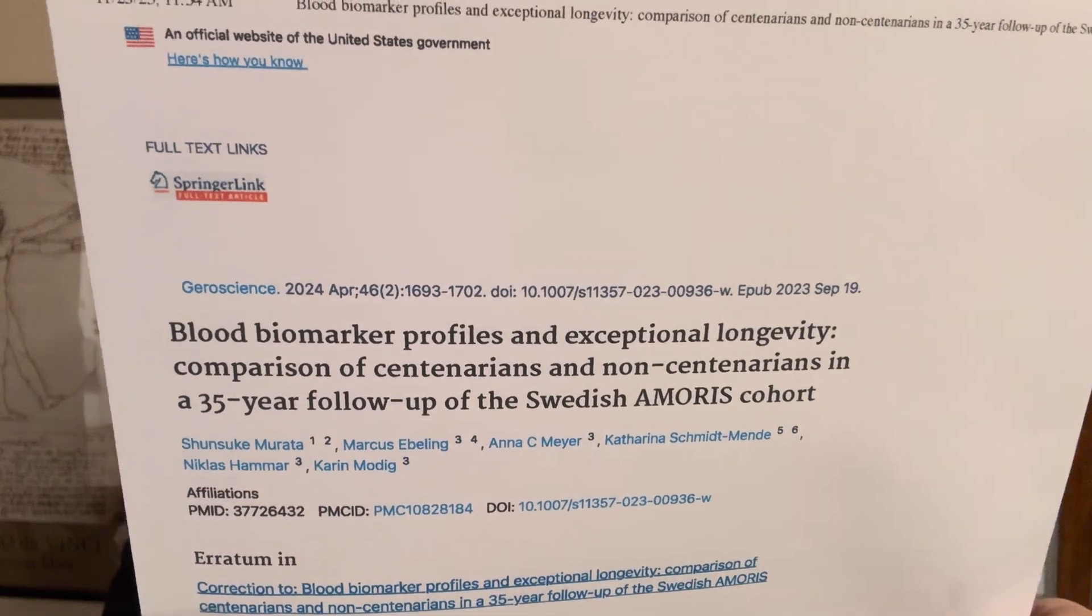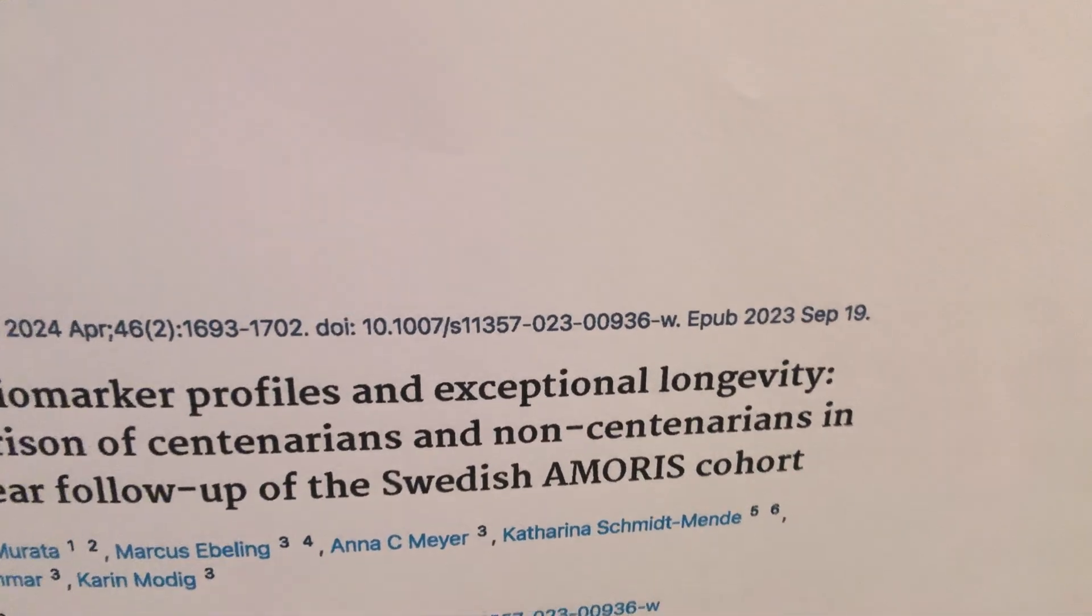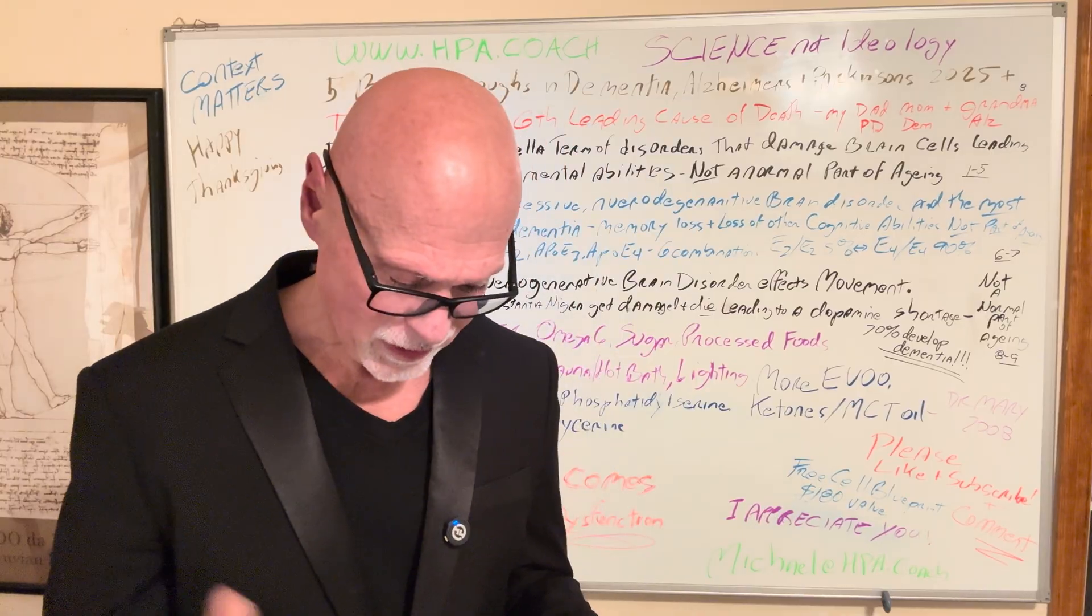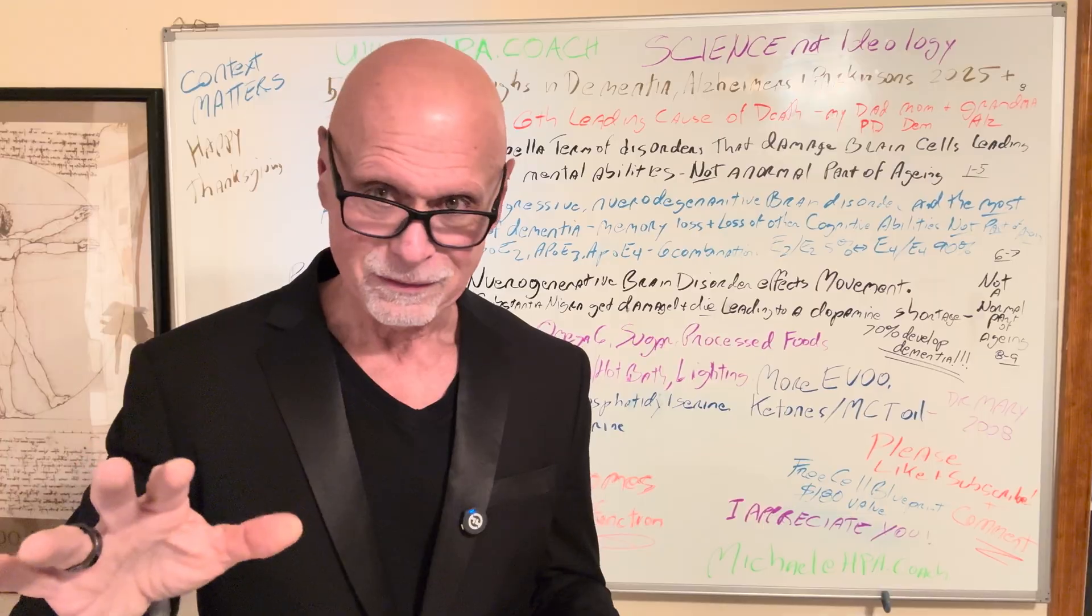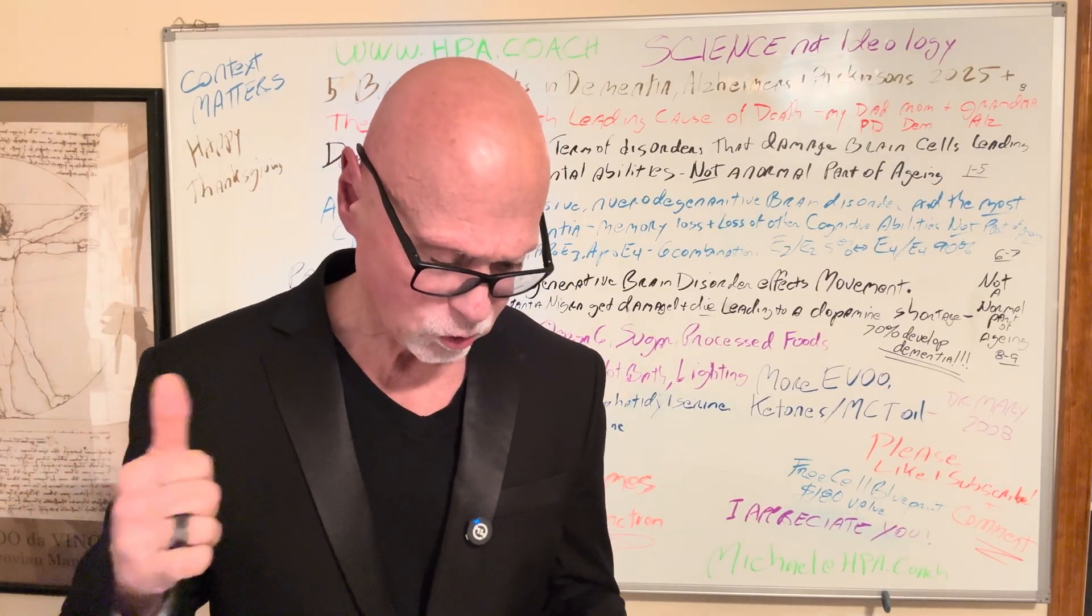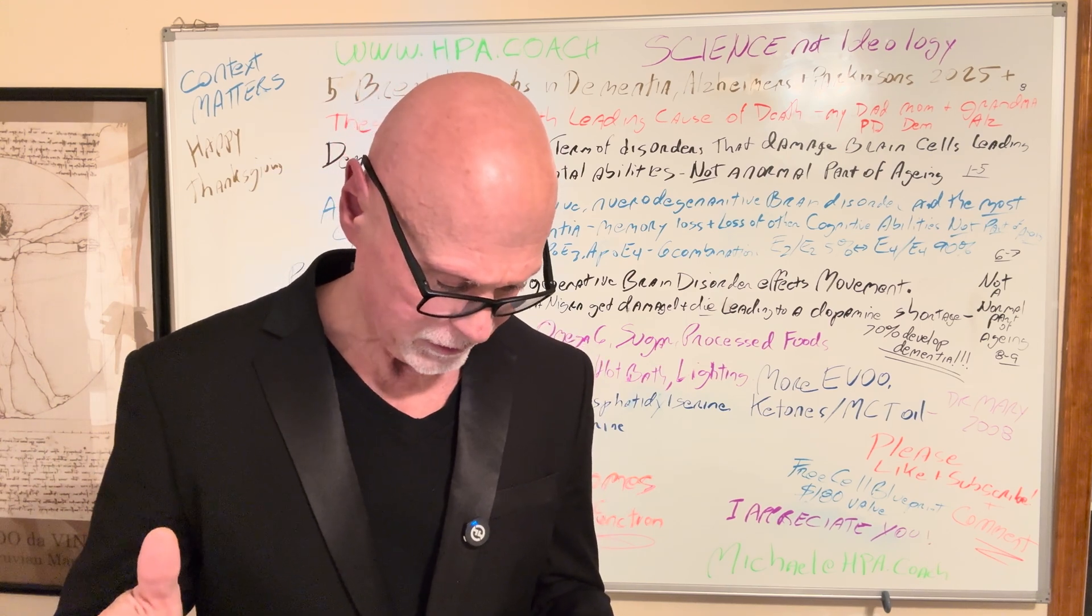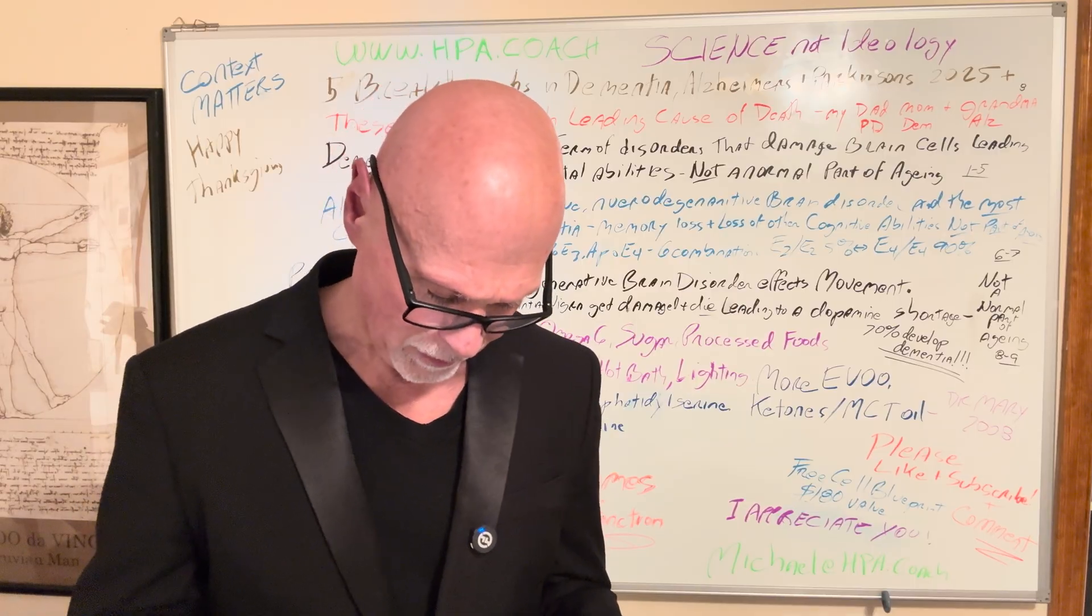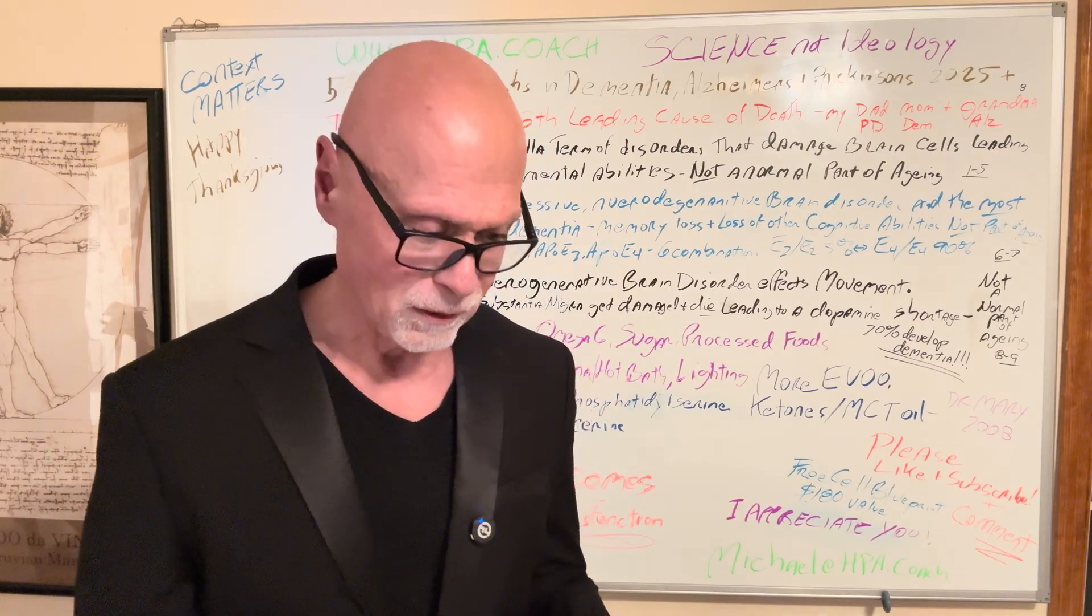Next one. Blood biomarker profiles in exceptional longevity, comparison of centenarians and non-centenarians. Okay, it's a 35-year study. Basically, they're saying higher levels of total cholesterol and iron, I think it's normal high iron, not high iron, and lower levels of glucose, creatinine, uric acid, AST, GGT, alkaline phosphatase, lactic LDH, and total iron binding capacity were associated with people reaching 100 years old.